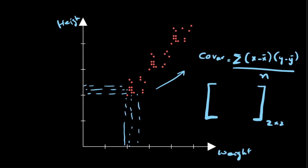So the covariance matrix in a 2×2 space — the first element gives what is the variance of these data points in the x direction, and what is the covariance of these data points in the x and y direction.